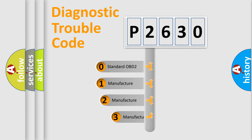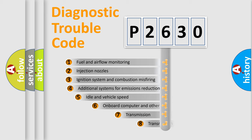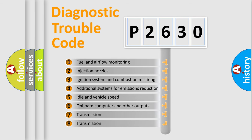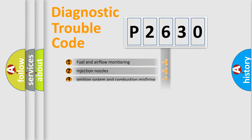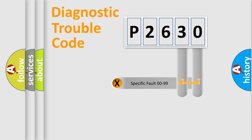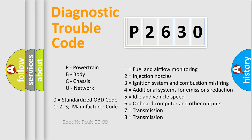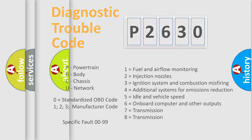If the second character is expressed as zero, it is a standardized error. In the case of numbers 1, 2, or 3, it is a manufacturer-specific error. The third character specifies a subset of errors. This distribution is valid only for the standardized DTC code, and only the last two characters define the specific fault of the group.